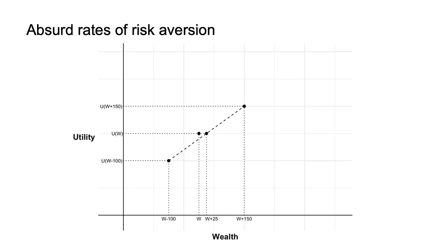The expected utility of the bet is the probability-weighted utility of each of the two possible outcomes. Therefore, if I draw a line between the utility of each outcome, that line will pass through the expected utility of the bet. I have now added a line between the utility for the two possible outcomes, with the expected utility of the bet in the middle of the line, as each outcome has a 50% probability. As the person is risk-averse at all levels of wealth, all parts of the utility curve are at a minimum weakly concave. We can therefore draw part of the utility curve as the least risk-averse they could be while still rejecting the bet, shown in the solid black line.